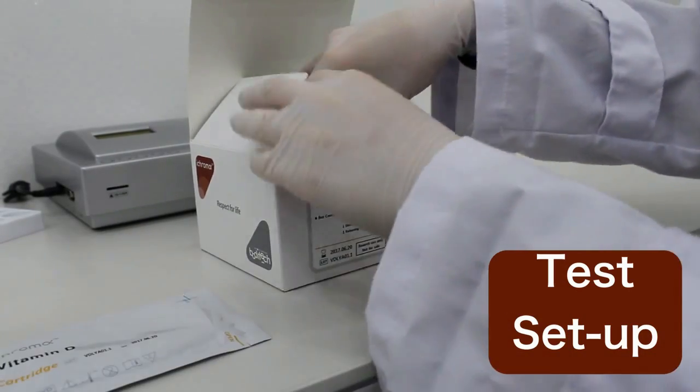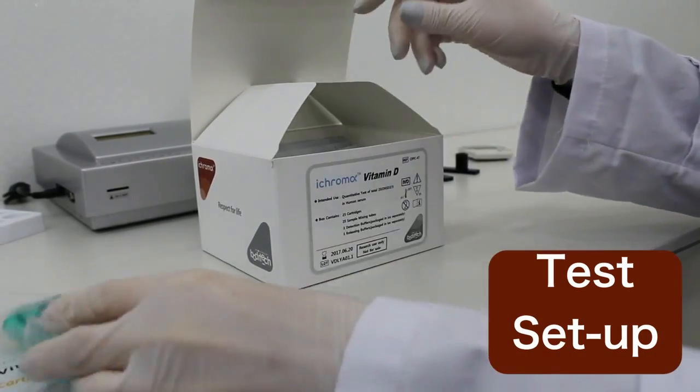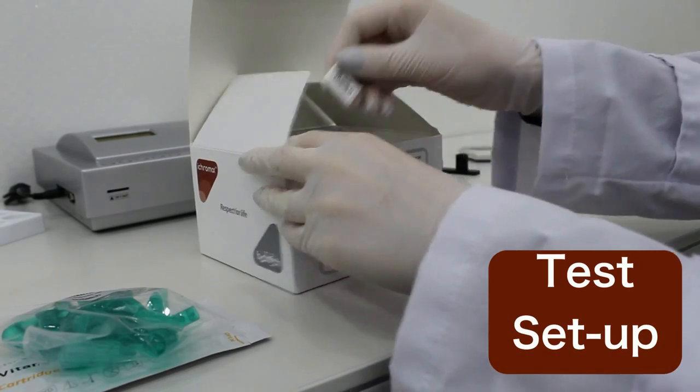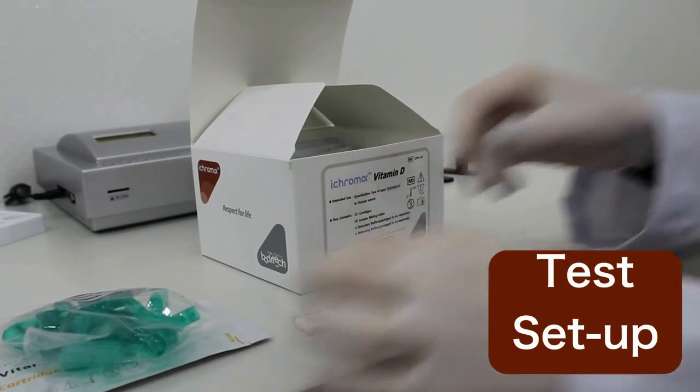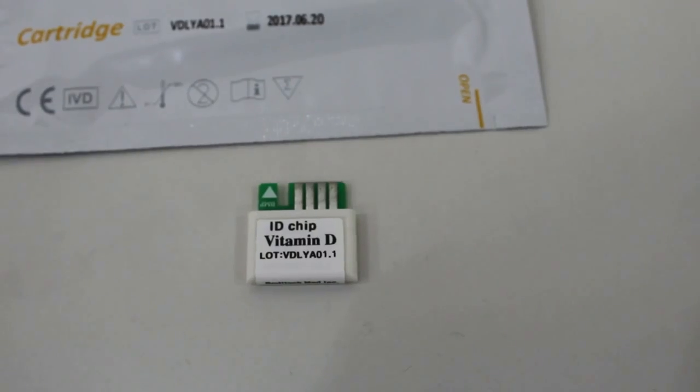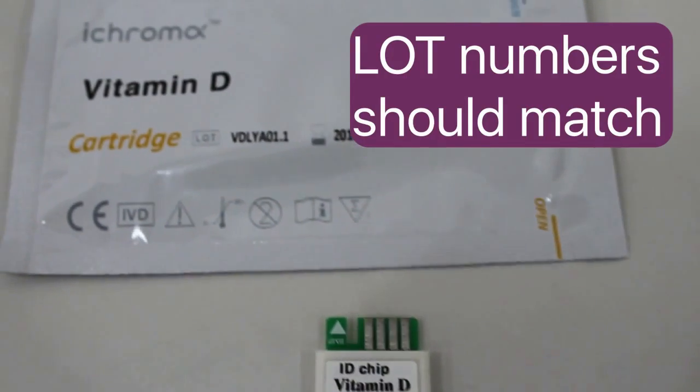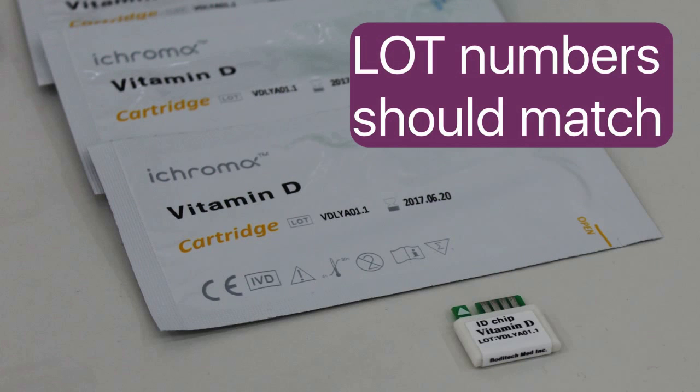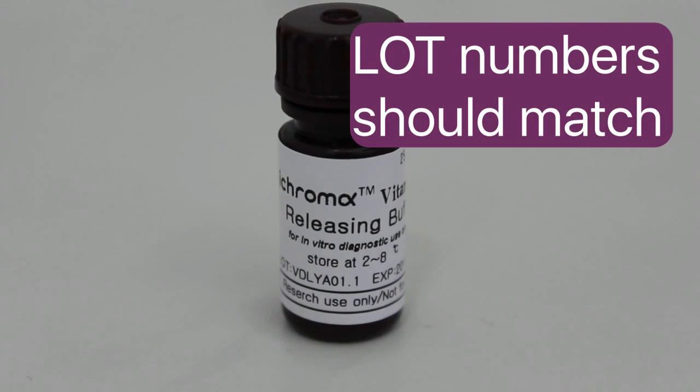The vitamin D kit should have the sealed test cartridge, mixing tubes, ID chip, releasing and detection buffers. Also make sure that the lot number of the test cartridge matches with that of the ID chip as well as the releasing and detection buffers.